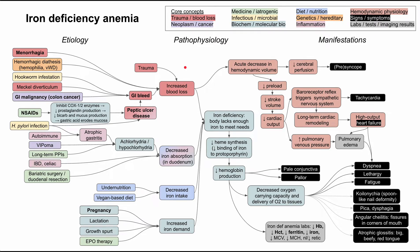This is a mechanism of disease map for iron deficiency anemia. I'll be talking about the etiology of iron deficiency anemia, as well as the pathophysiology and how it manifests in the clinic. All of these bubbles are color-coded according to core concepts listed in the legend. I'll be clearing all of these items and talking through each of them one by one.